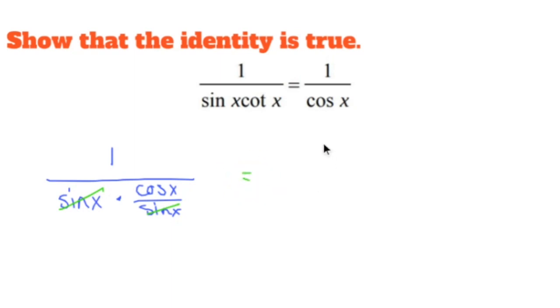Now, when I do that, I'm left with one over cos x.